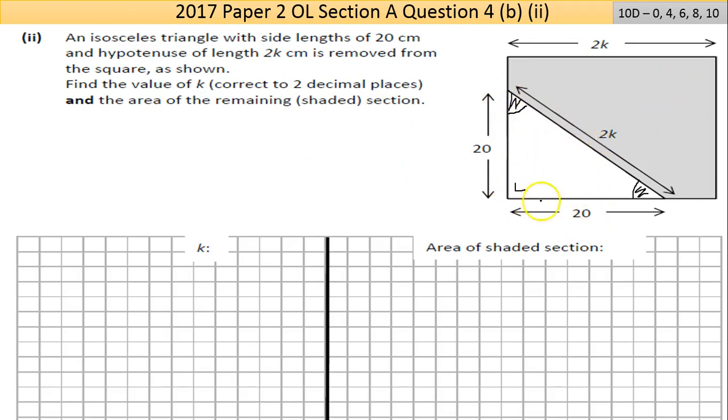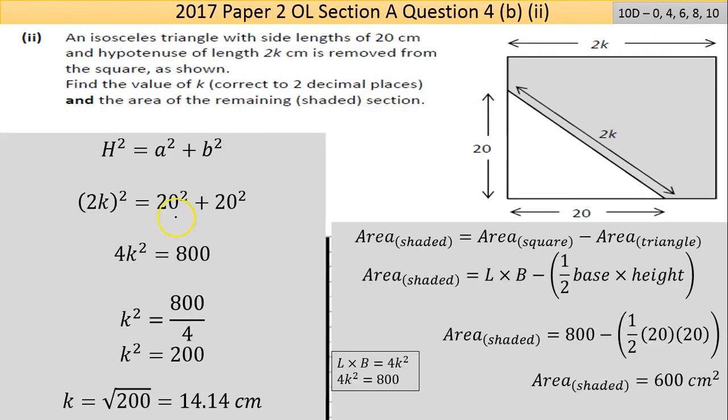It's a right-angled triangle and they mention hypotenuse, so we have to use Pythagoras's theorem. There's the Pythagoras theorem written out: hypotenuse 2k, so (2k)² = 20² + 20². If I'm squaring this term, I square the number and the letter, so it's 2² times k², which is 4k². Then 20² plus 20² is 400 plus 400, giving you 800.